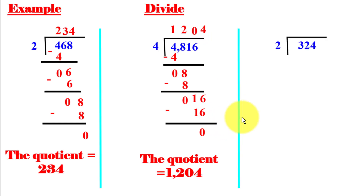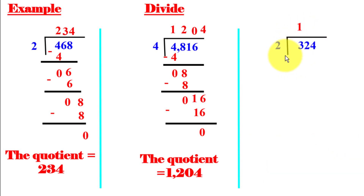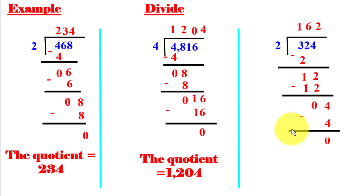Next: 324 divided by 2. Start left: 3 divided by 2 — no number times 2 gives exactly 3, so we use 1: 1 times 2 equals 2, subtract to get remainder 1. Bring down 2 to get 12: 12 divided by 2 equals 6, 6 times 2 equals 12, subtract to get 0. Bring down 4: 4 divided by 2 equals 2, 2 times 2 equals 4, subtract to get 0. The quotient is 162.